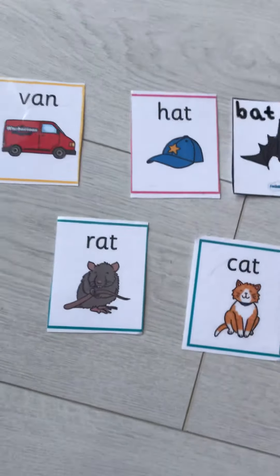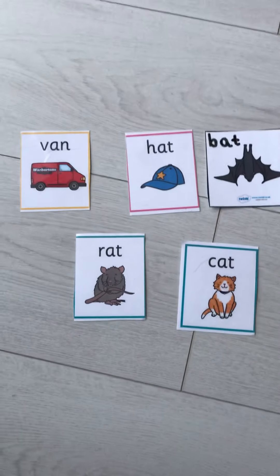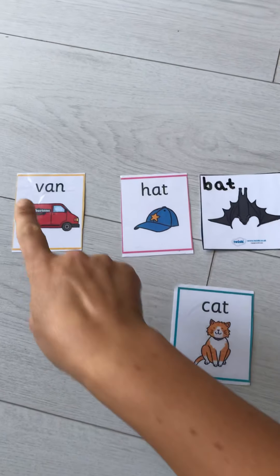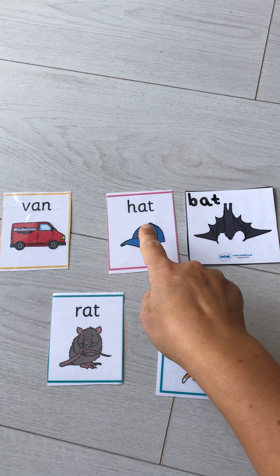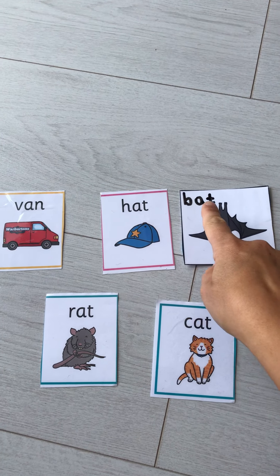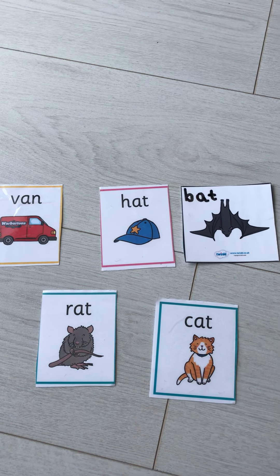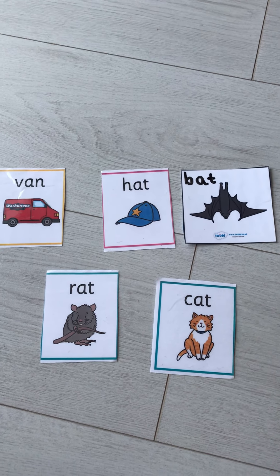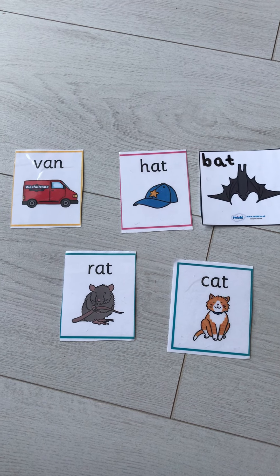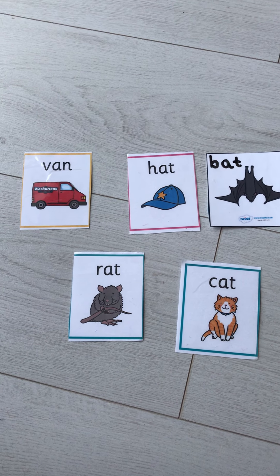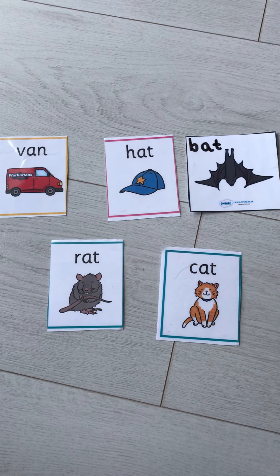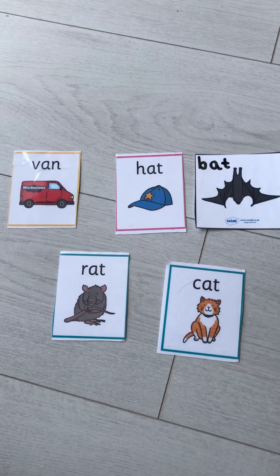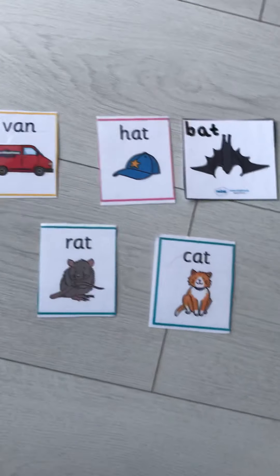Now children, I want to play a game with you. Here I've got some words — can you see them? Let's read them: I've got a van, hat, bat, rat, and a cat. Now you can help me find some of these words. I'm going to trick you though — I'm not just going to say the word, I'll try and catch you out!